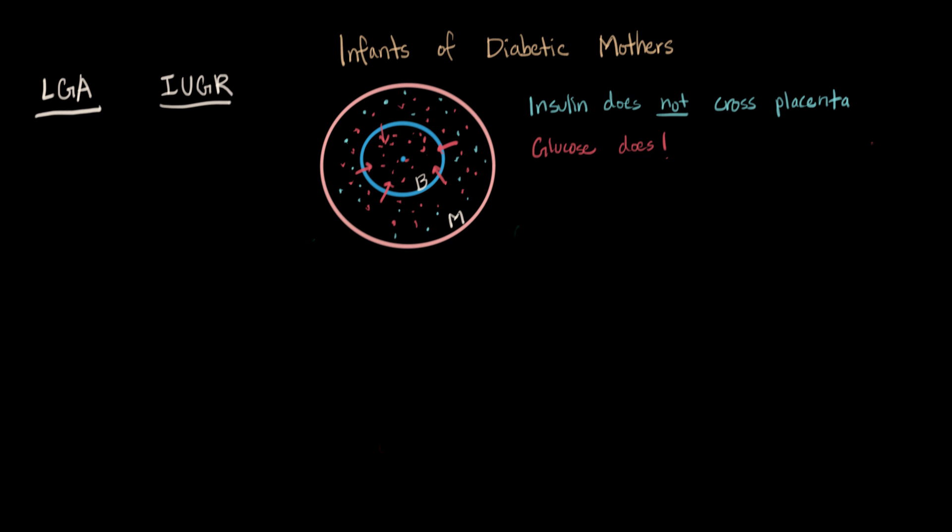And since the baby already has a functioning, healthy pancreas, when it sees this increase in glucose, it's gonna produce its own insulin. So the baby also has a high glucose, high insulin kind of condition.